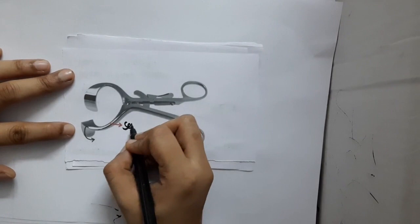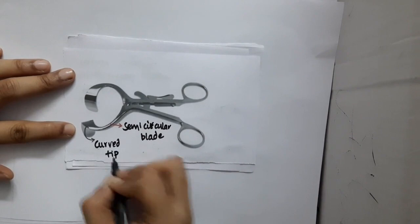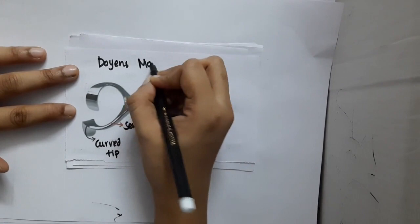This blade is semicircular, half-circle in shape, and you also have a curved tip. So what is this? This is Doyen's mouth gag.